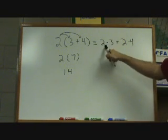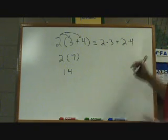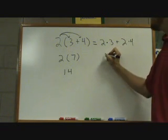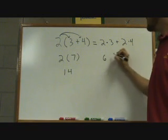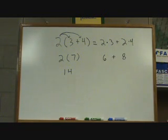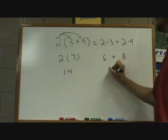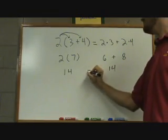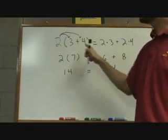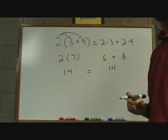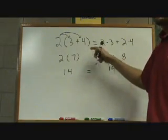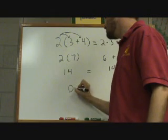Now, again, following our order of operations, 2 times 3 and 2 times 4, those are multiplications. So, that's going to happen before the addition. So, I do my multiplication from left to right. This plus sign stays in there. And 6 plus 8 does indeed give me 14. So, we can verify that these two things are equal. So, the distributive property is a number times the parentheses. And it basically says take that number times everything in the parentheses. This is the distributive property.